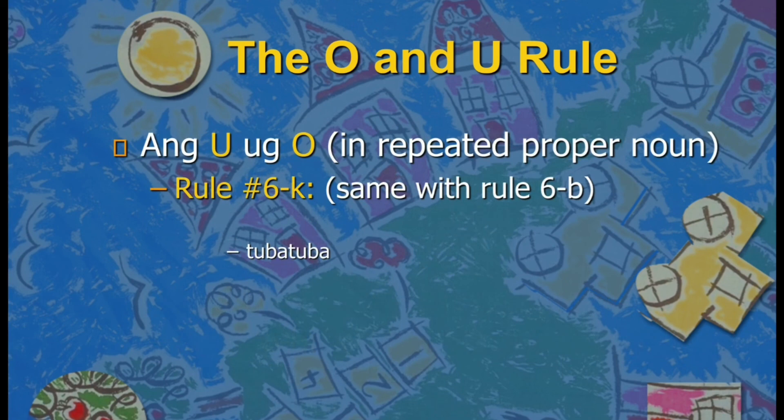For O and U in repeated proper nouns, you adopt the rule in Rule 6B — the first and middle syllables should be U and the last syllable should be O. In this example, it is all U because the letters are in the first and middle syllable of the word.